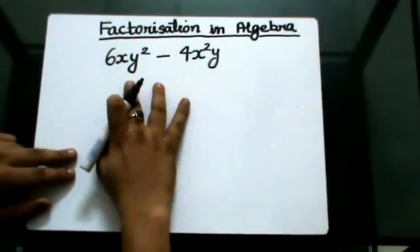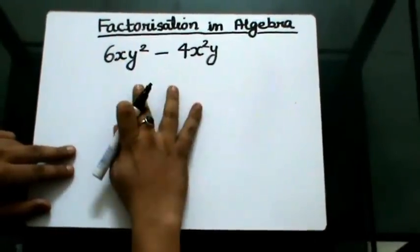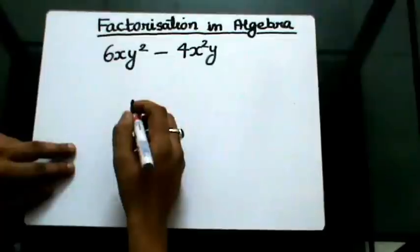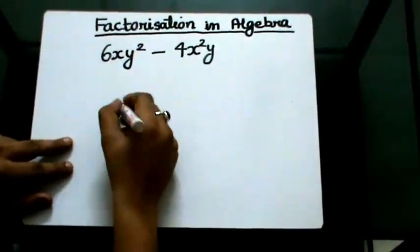So we are going to take the common factors out, and this type of factorization is actually the simplest form, or type 1 of factorization. Let's write this down.